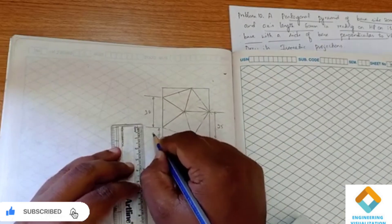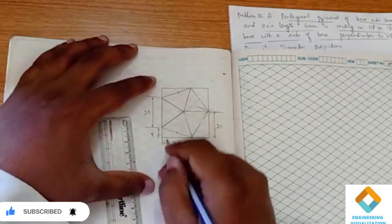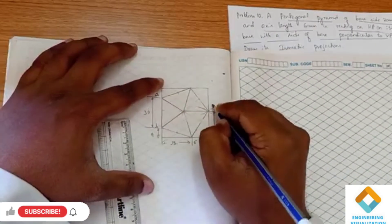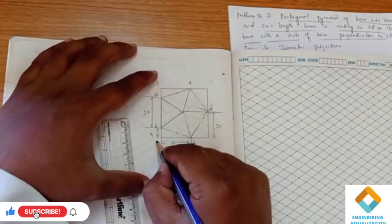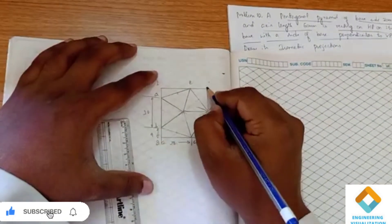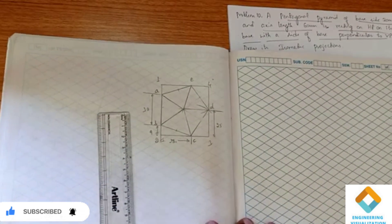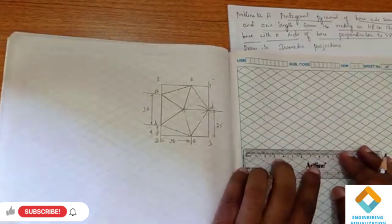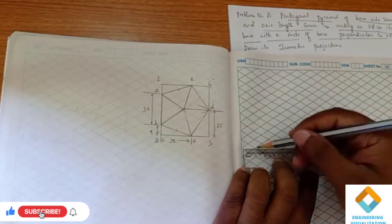9mm. So here I am going to label the points — this is a, b, c, d, e — and for the box I am giving this one, two, three, and four. Now using these box dimensions we can easily construct the pyramid. I will be taking this as reference.